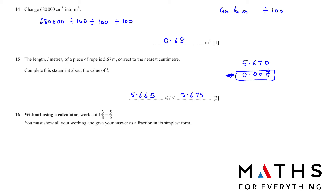Question 16: without using a calculator, work out 1 and 3/8 minus 5/6. We show our working without the calculator. Press shift and the fraction button to get three boxes; enter 1, 3, and 8 to convert to the improper fraction 11/8. Alternatively, 8 multiplied by 1 plus 3 equals 11, giving 11/8. So we need to calculate 11/8 minus 5/6.